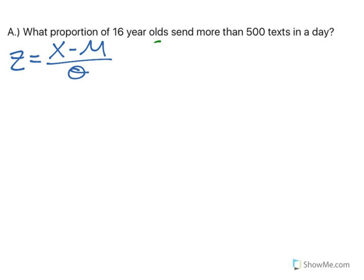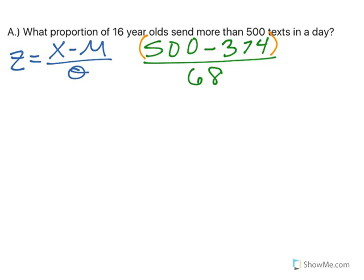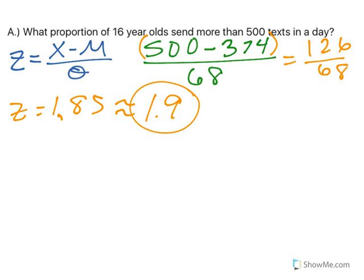Our value is 500, our mean is 374, and our standard deviation is 68 based off the material from the previous page. Make sure you do your numerator first. So 126 over 68 comes out to be approximately 1.85. Well, if you look at the table, 1.85 is not in there. So I'm going to go ahead and round that up to a z-score of 1.9.